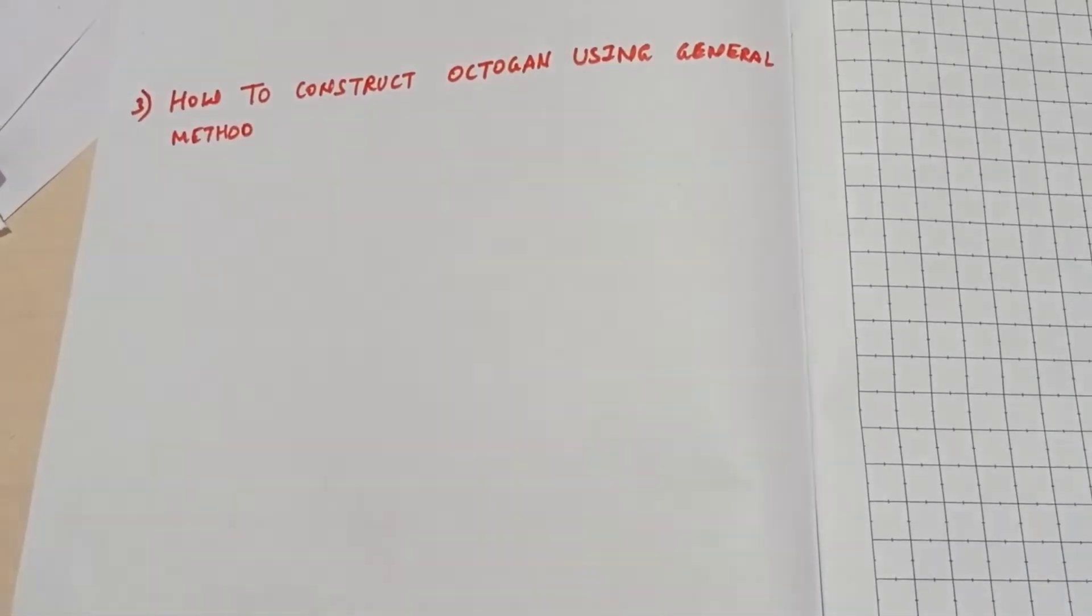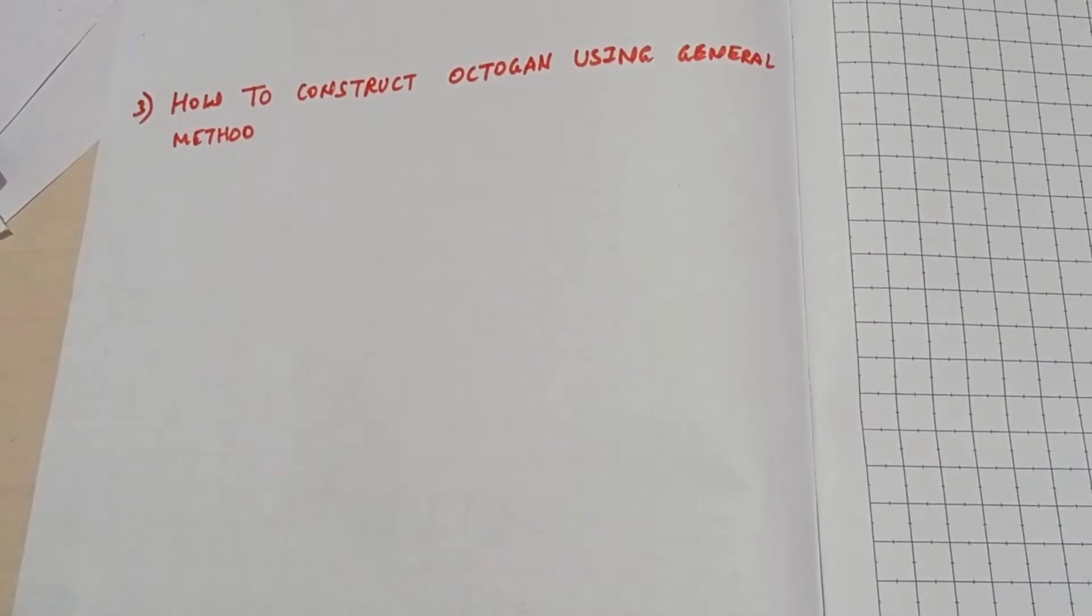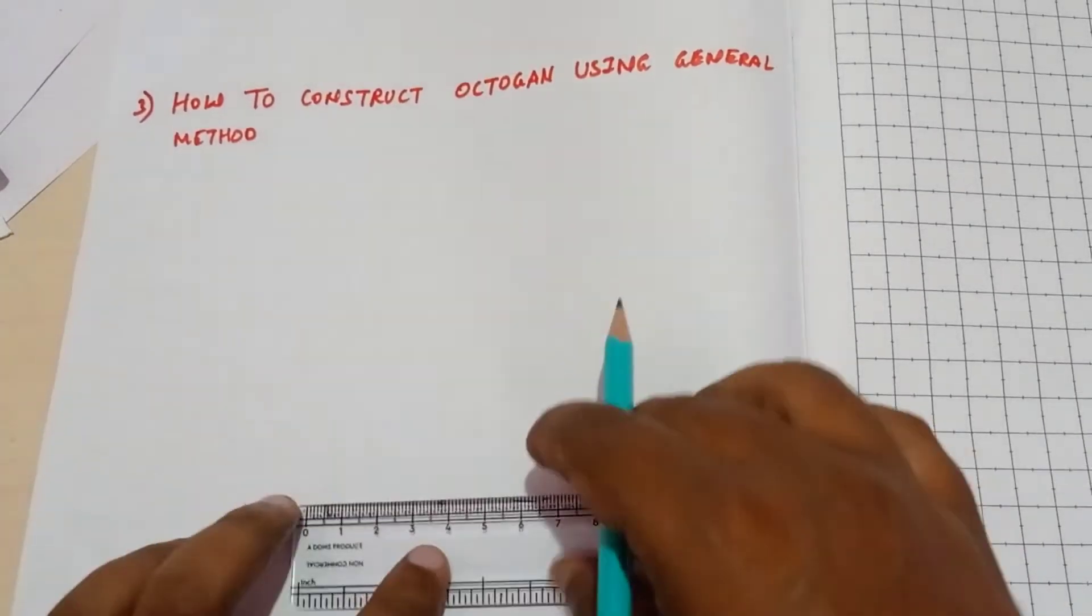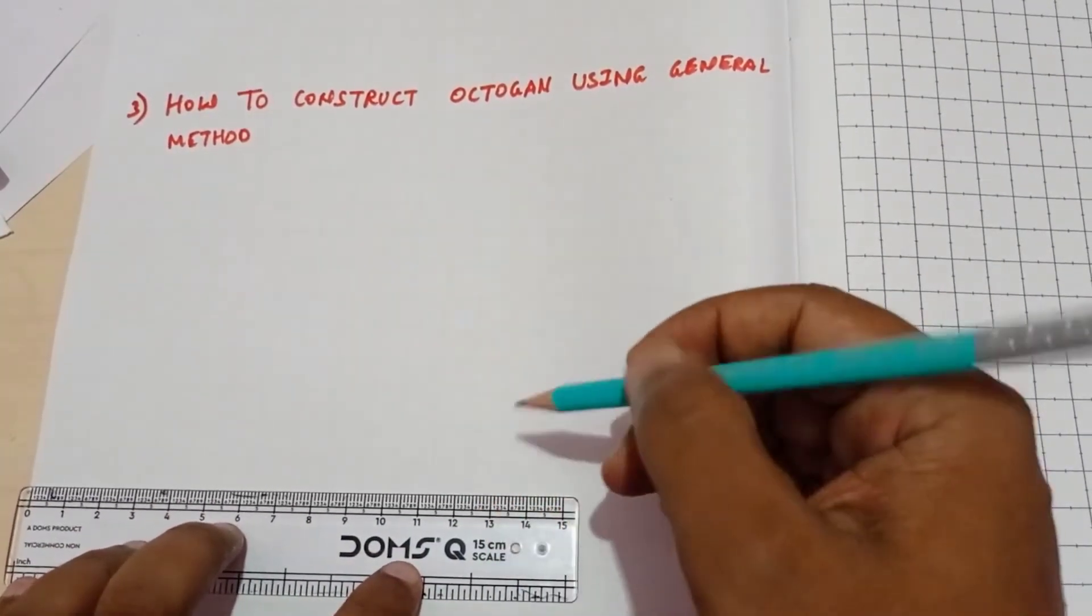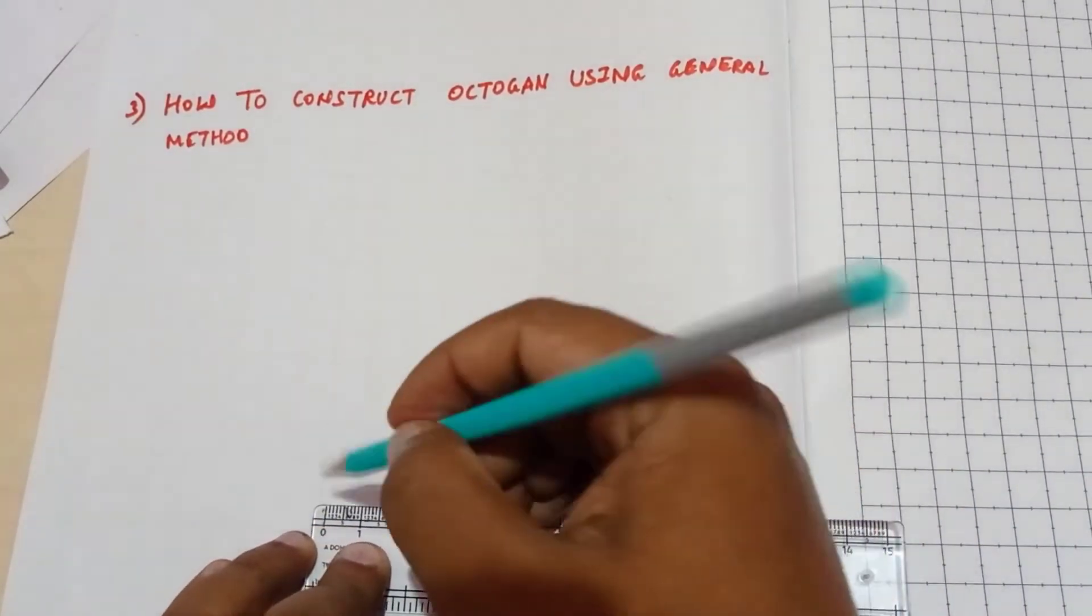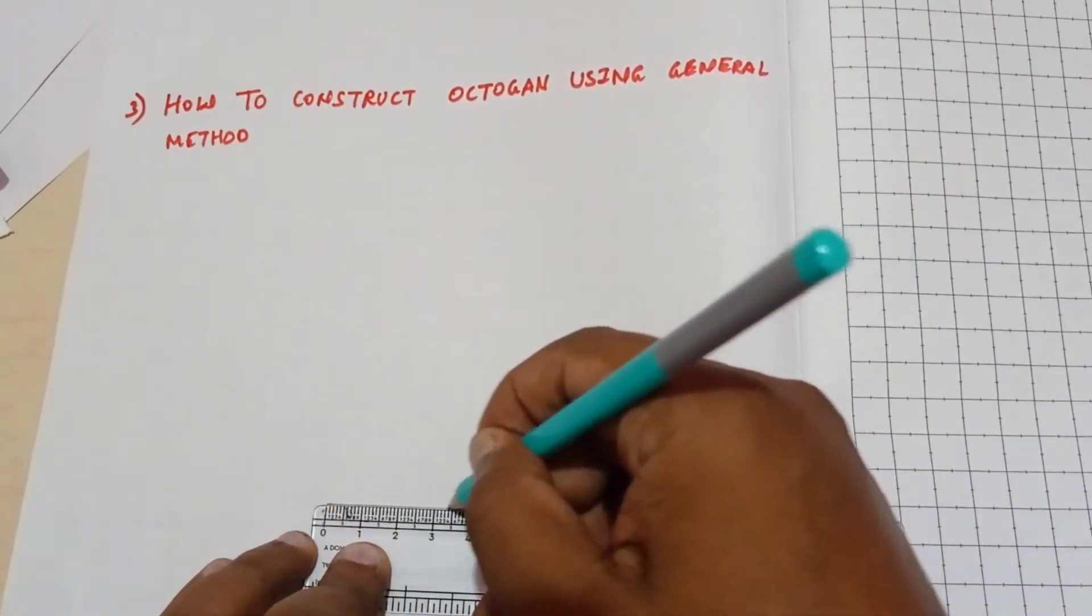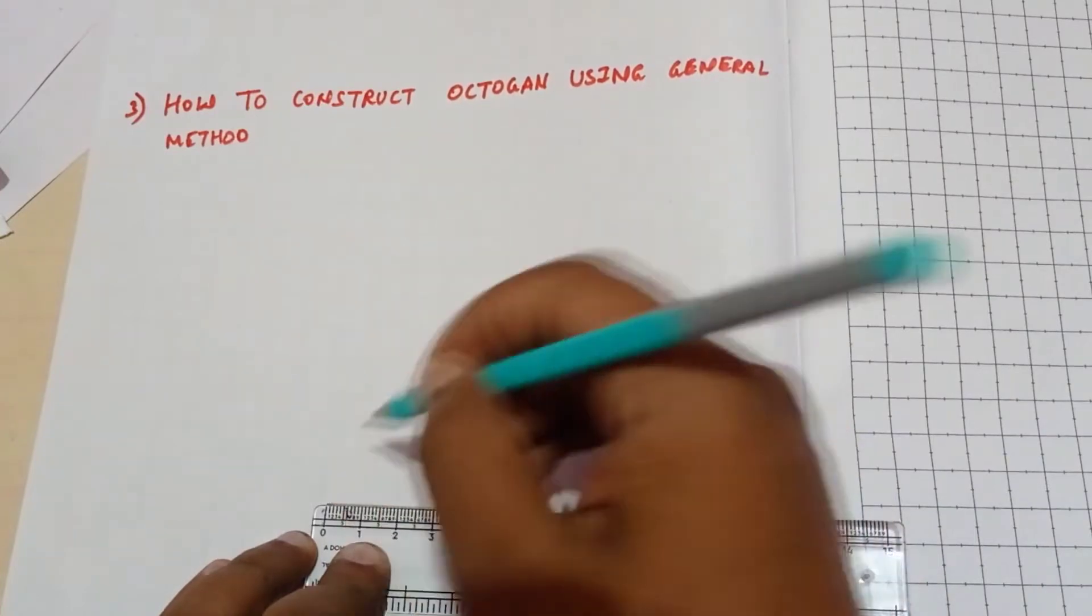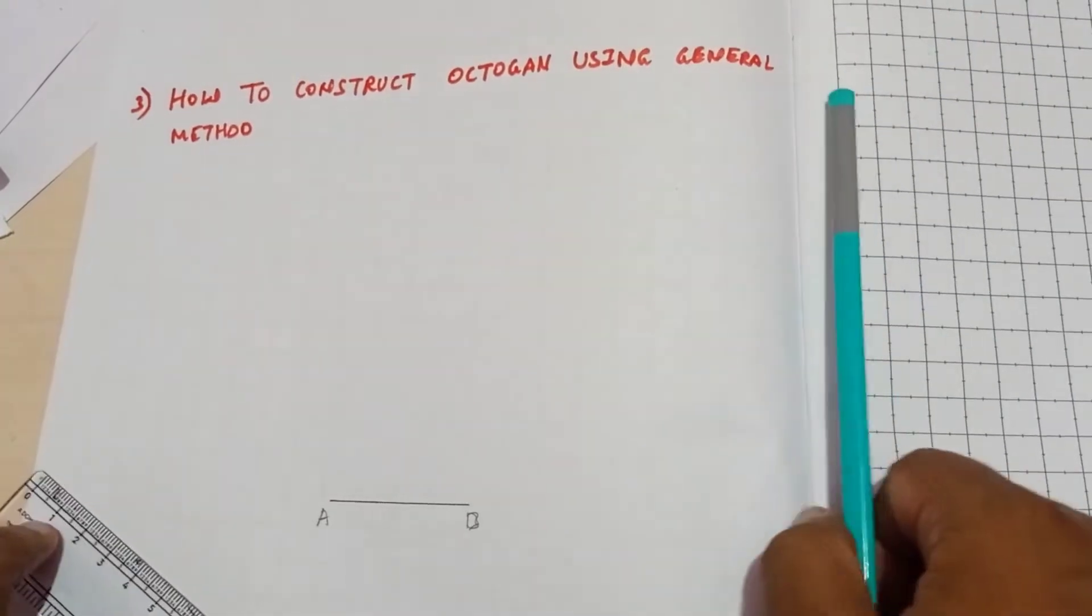Welcome to engineering visualization channel. Today we are going to learn how to construct an octagon using the general method. First, I am going to construct a line of length 40 mm. You can take any dimensions. This point is A, this point is B.